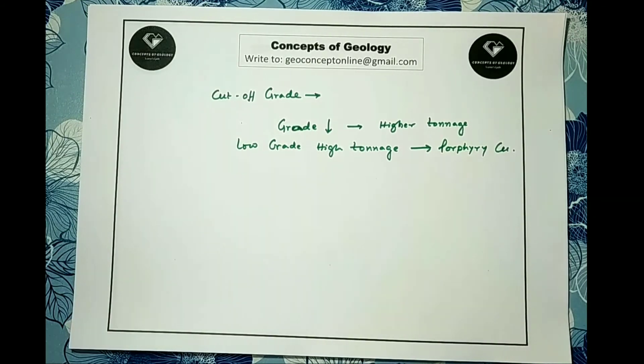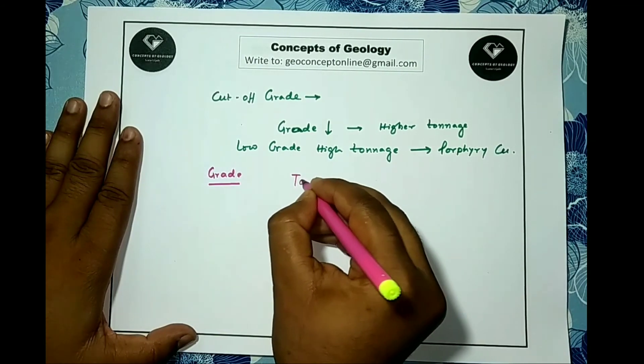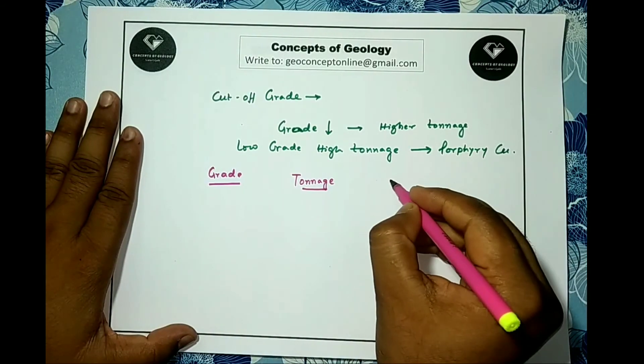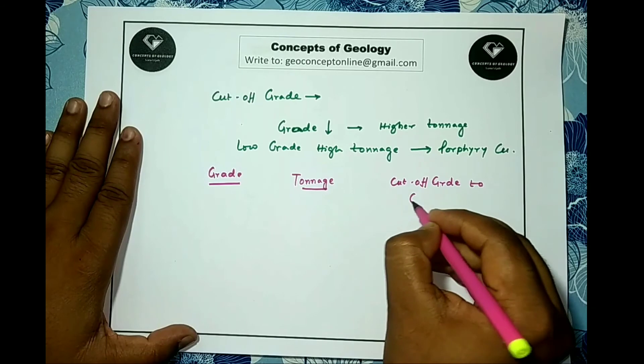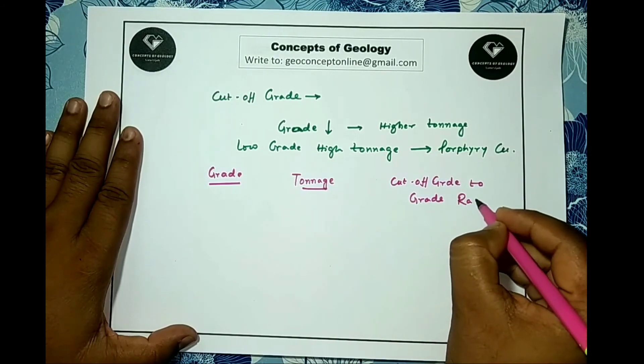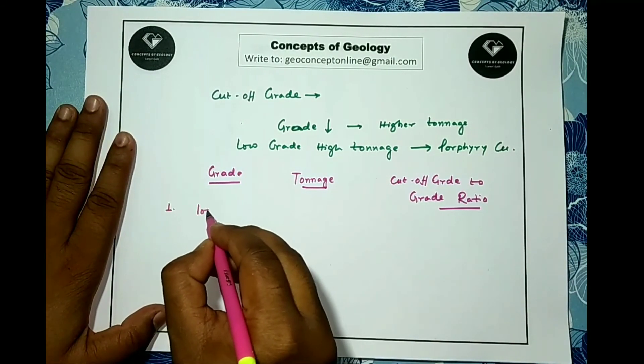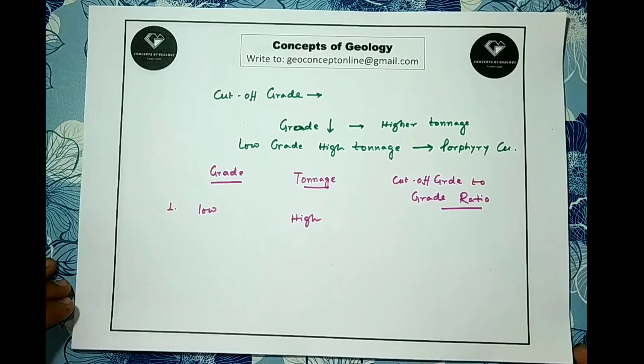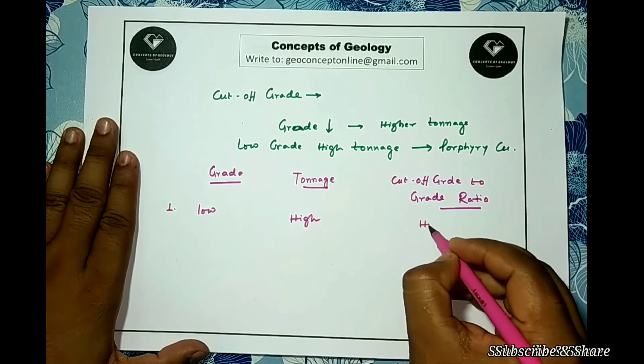Let's note in a clear way: grade, tonnage, and cutoff grade to grade ratio. First, my grade is lower, tonnage will be high because we need more metal to be profitable, and here the cutoff grade to grade ratio will be higher.